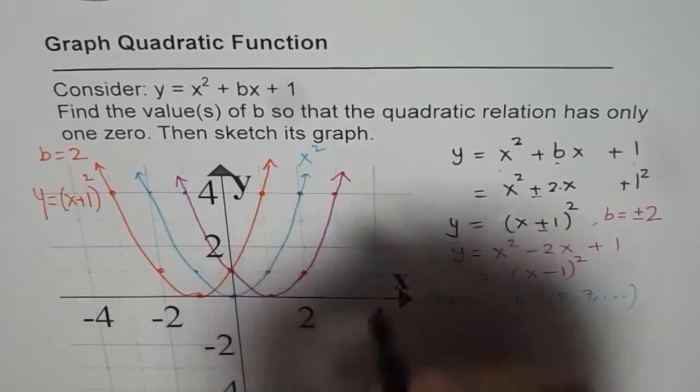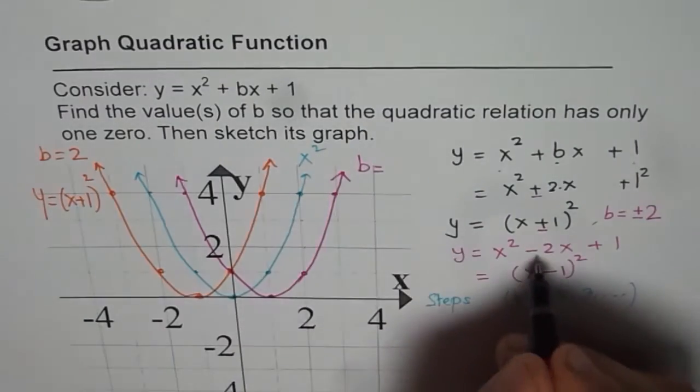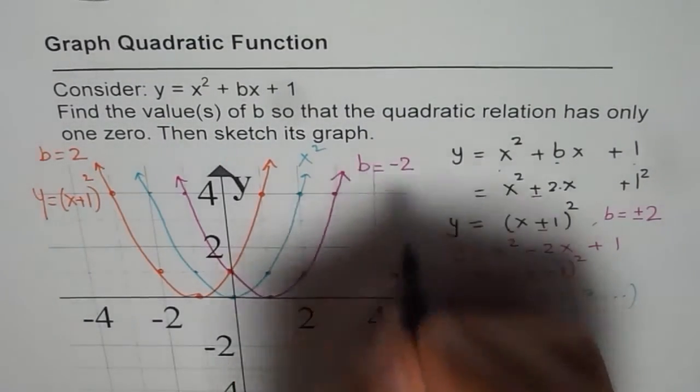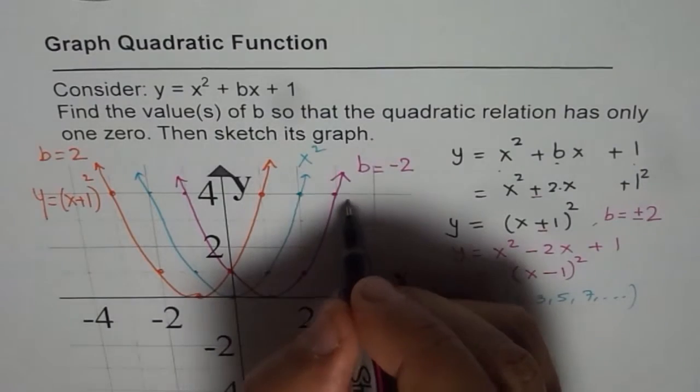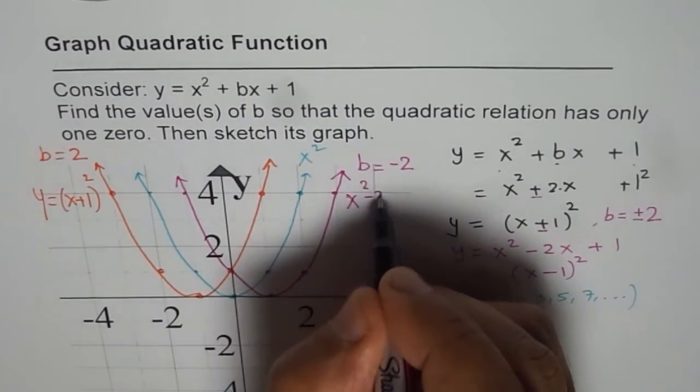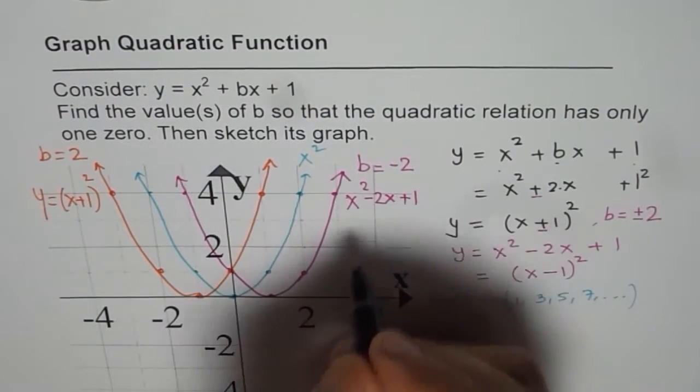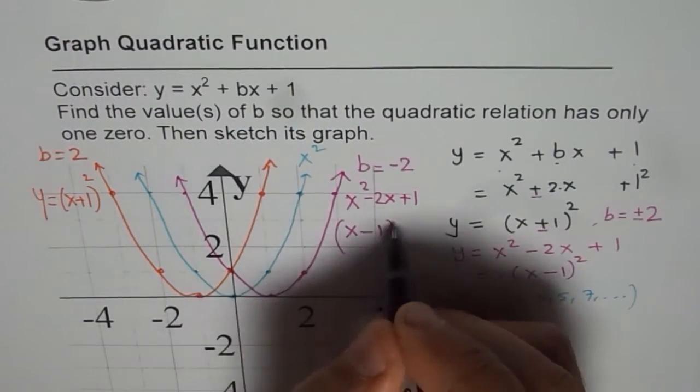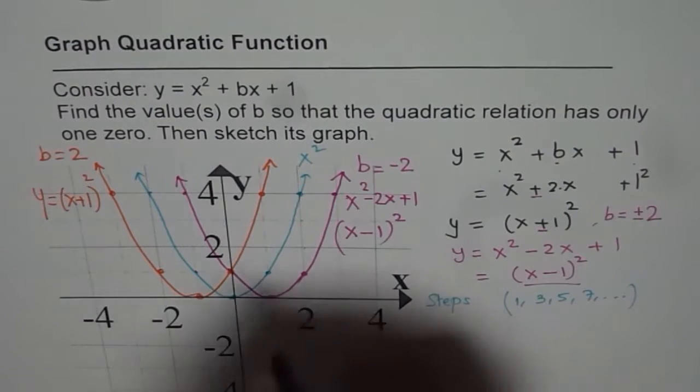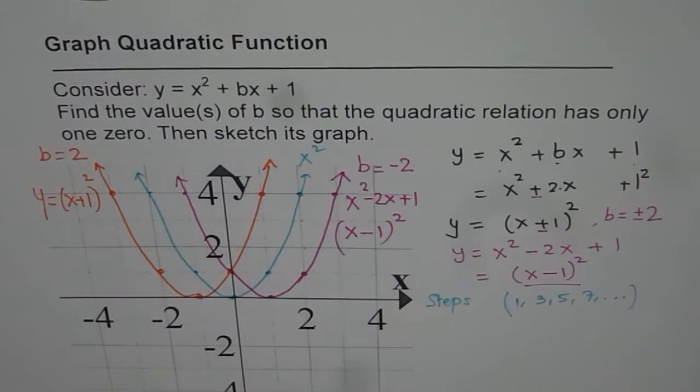I get this function which is for b equals minus two. In that case the function will be x squared minus 2x plus 1, or you could write this as x minus one whole squared. So that is how you can do such questions.